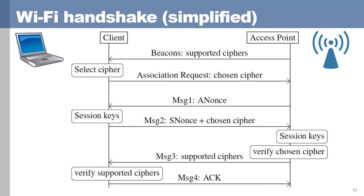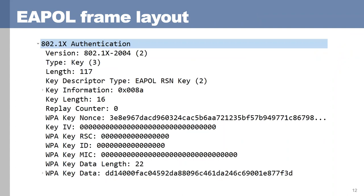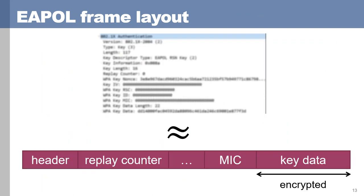That covers the messages exchanged in the handshake. The final part to explain is how these messages are defined. They are defined using EAPOL frames, and this screenshot from Wireshark shows all the fields that make up an EAPOL frame. We can drastically simplify this: an EAPOL frame has a header defining the source, destination, and what type of message it is — for example, whether this is message one, two, three, or four — along with a replay counter. It also has a MIC, which stands for Message Integrity Code, used to verify the authenticity of the frame. Finally, it also has a key data field.